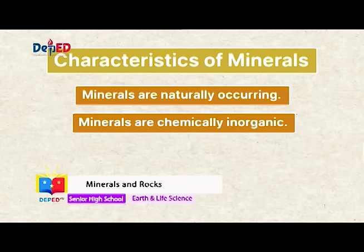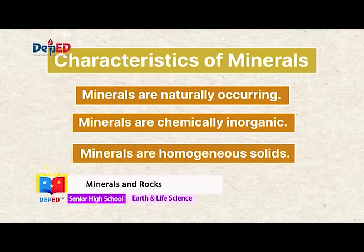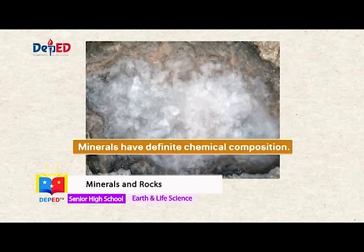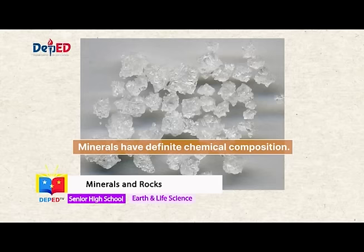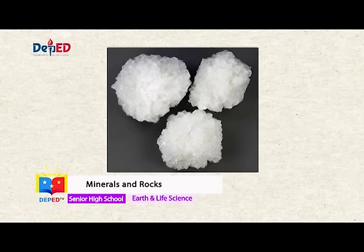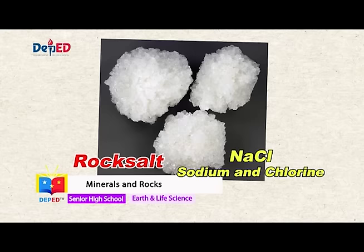The third one is minerals are homogenous solids. It has a definite volume and rigid shape. It is chemically and physically uniform down to the atomic level. Fourth, minerals have definite chemical composition. This means that all occurrences of that mineral have a chemical composition that varies within a specific limited range. Example of this is the mineral called halite, also known as rock salt. It has a chemical composition of NaCl, made up of equal number of atoms of sodium and chlorine.